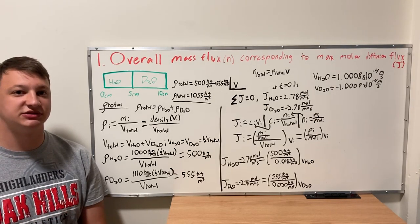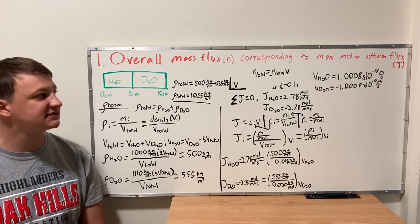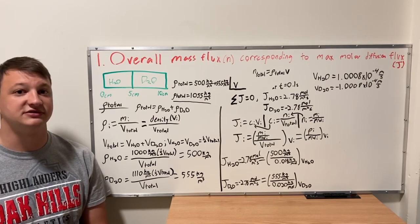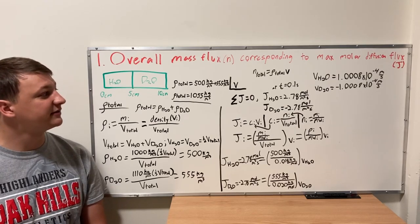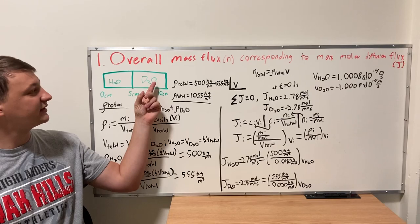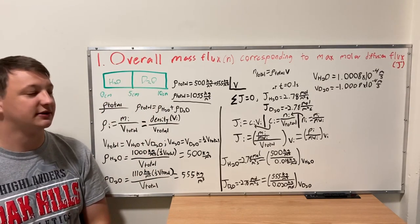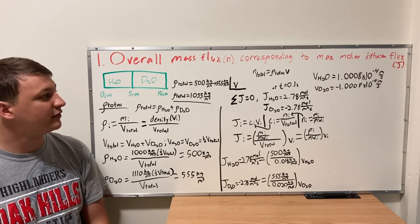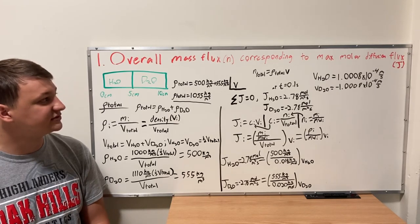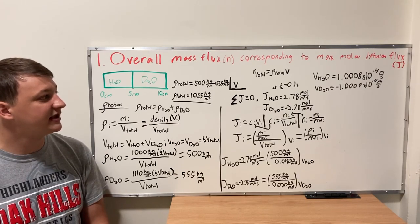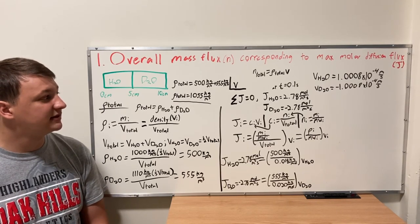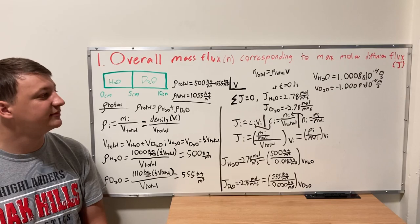Now that we have our total mass concentration, we look at velocity. We need to find the maximum molar diffusive flux. The sum of all molar diffusive fluxes is zero, since the amount going right from water cancels with the amount going left from deuterated water. We're given that the molar diffusive flux at t = 0.1 seconds — the maximum — is 2.78 mol/m²/s. So the equal and opposite flux for deuterated water is −2.78 mol/m²/s.